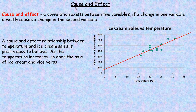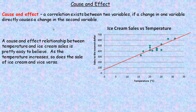In this tutorial we're going to take a look at cause and effect and different relationships between variables. A correlation exists between two variables if a change in one variable directly causes a change in a second variable. That's a cause and effect relationship.